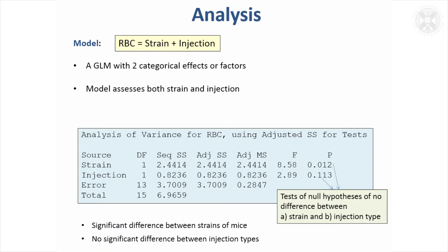So that's basically what two-way analysis of variance is — there are two factors of interest in the same set of data, and you can address them both at once in the same analysis of variance model.